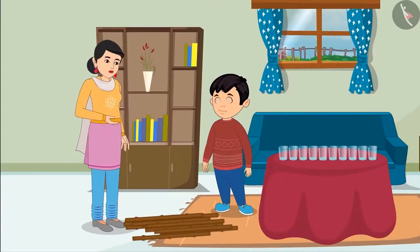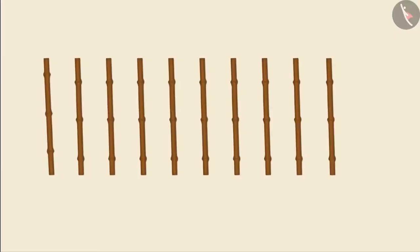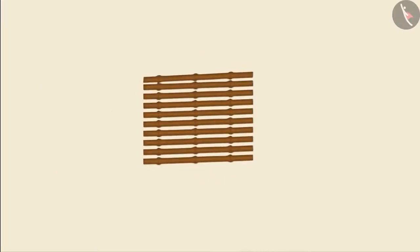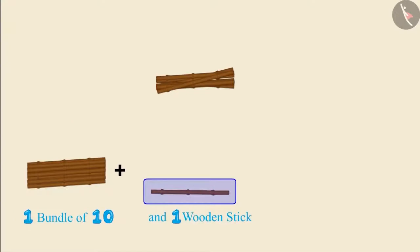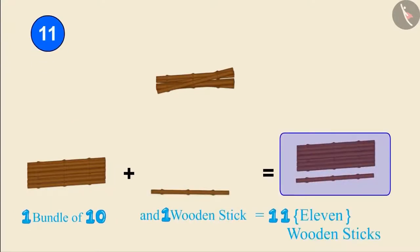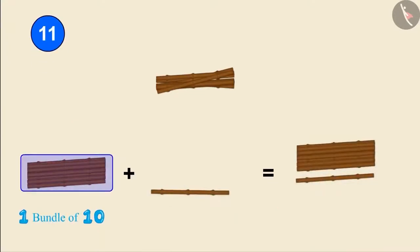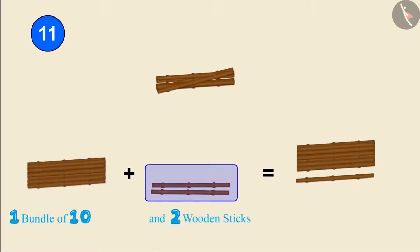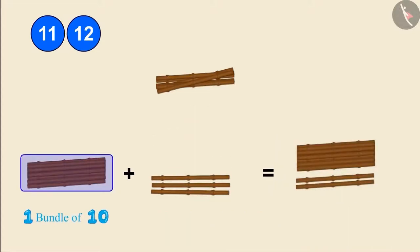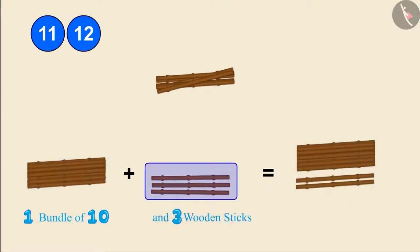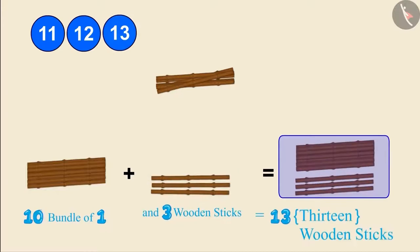Very good. Now let's count the remaining wooden sticks. These are 10 sticks, so let's make their bundle of 10 like this. One bundle of 10 and one more wooden stick make 11 wooden sticks.